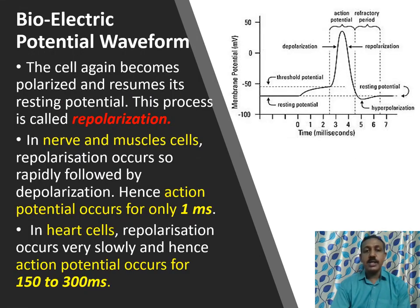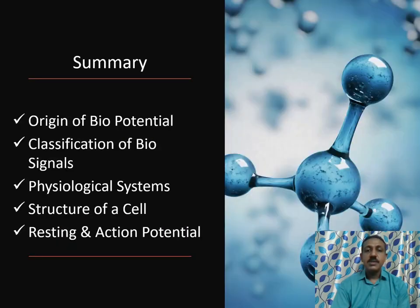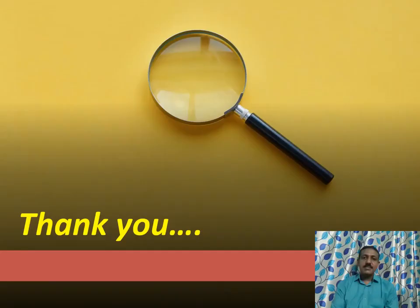The cell again becomes polarized and resumes its resting potential; this process is called repolarization. In nerve and muscle cells, repolarization occurs very rapidly, immediately after depolarization, so the action potential lasts only about one millisecond. In heart cells, repolarization occurs very slowly, and hence the action potential lasts for 150 to 300 milliseconds. In this lecture video, we have covered the topics: origin of biopotential, classification of biosignals, physiological systems, structure of a cell, and resting and action potential. Thanks for watching.